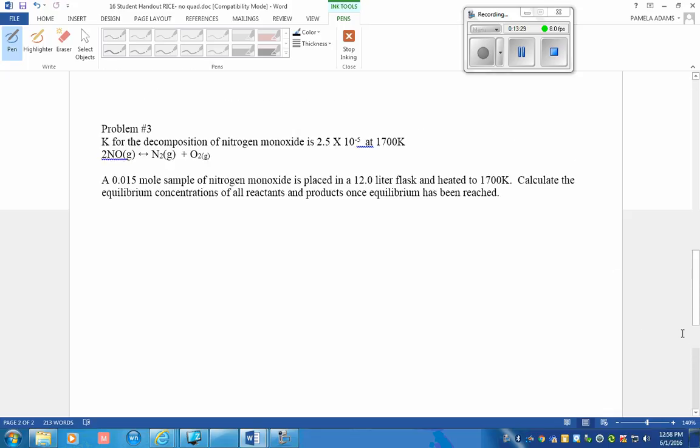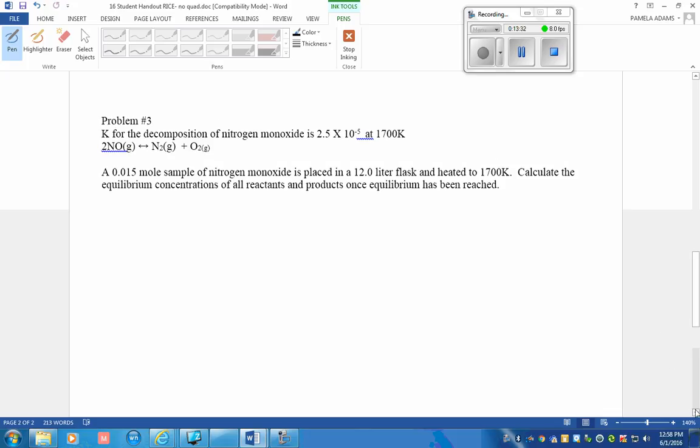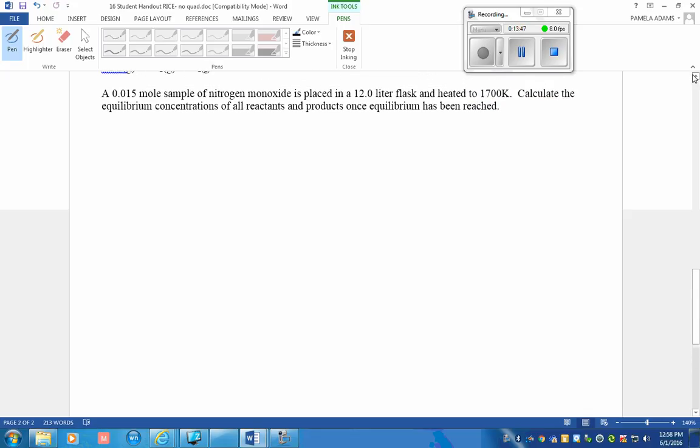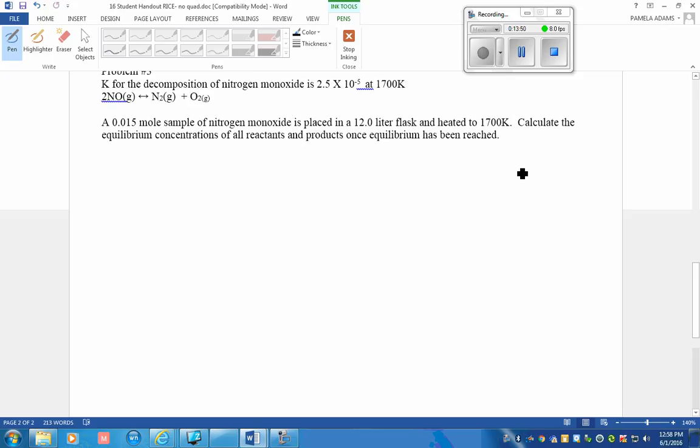Problem number 3. This is the first time that we have a coefficient in our problem other than 1. Problem number 3 says K for the decomposition of nitrogen monoxide is 2.5 times 10 to the negative 5 at 1700 K. Here is the balanced equation and they tell us how much is placed into a flask and heated.